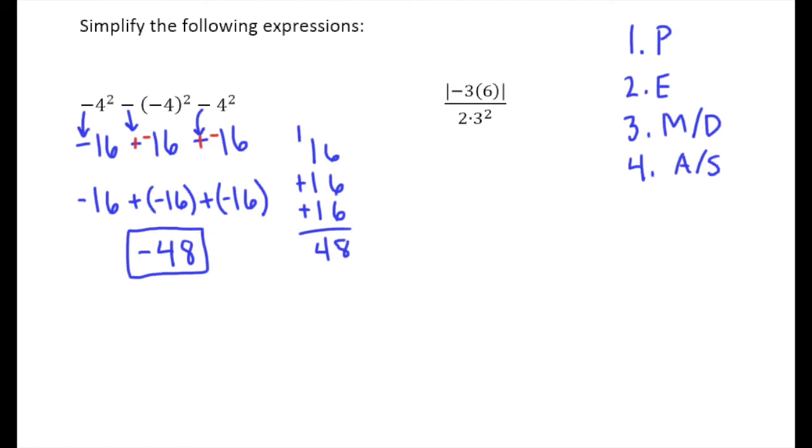Looking at this other example here, remember that a big division bar is kind of like a grouping symbol in itself. It means you need to do everything on top and everything on bottom first, and then at the very end, divide. On top, the first thing we need to do before worrying about those absolute value bars is to evaluate what's inside of them. So negative three times six is negative 18.